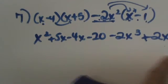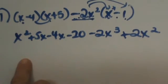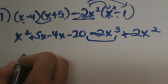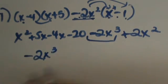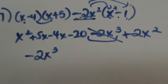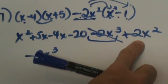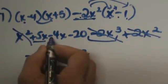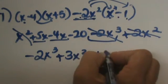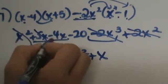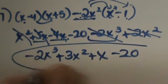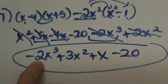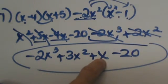Now I'll add like terms and arrange in descending order. The highest exponent is the cube, so bring down negative 2x cubed — be careful to bring the negative with it. Cross it out to mark it accounted for. Next, x squared and 2x squared add to 3x squared. Then 5x minus 4x is positive x. And finally just a minus 20. So the full simplified expression is negative 2x cubed plus 3x squared plus x minus 20.